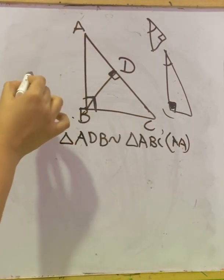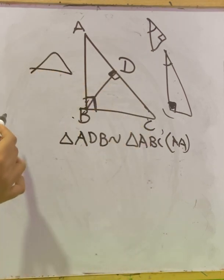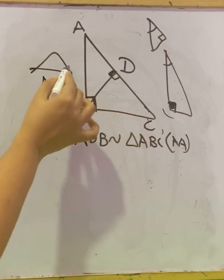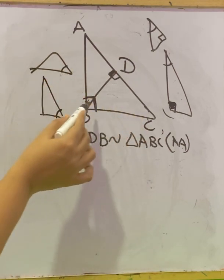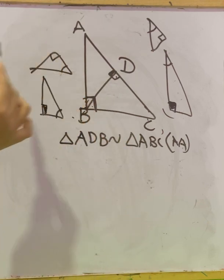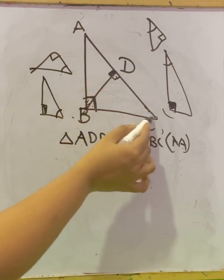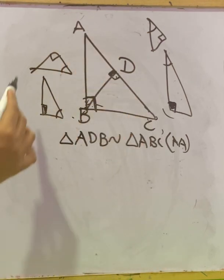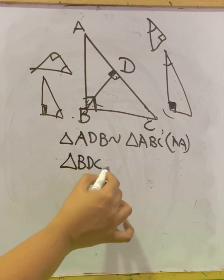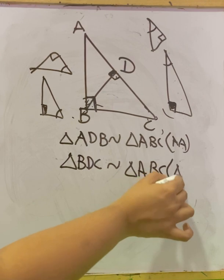Next, consider triangle BDC and the bigger triangle ABC. In that we have angle C common. And angle B in the bigger triangle is 90 degrees, and angle D here is again 90 degrees. So by AA similarity, triangle BDC is similar to triangle ABC.